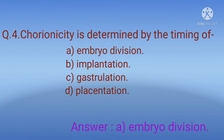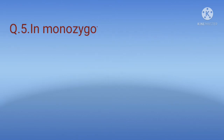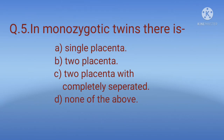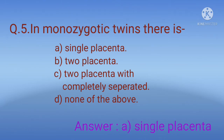Placentation means the arrangement or formation of the placenta. Question 5: In monozygotic twins there is? Options: A) Single placenta, B) Two placentas, C) Two placentas completely separated, D) None of the above. The correct option is A, single placenta.